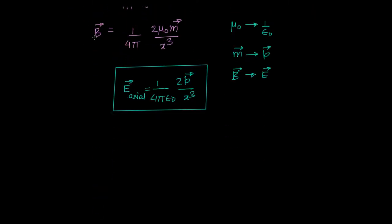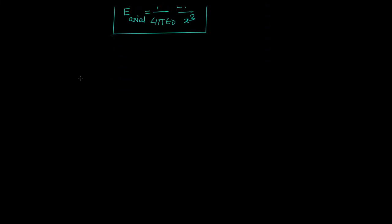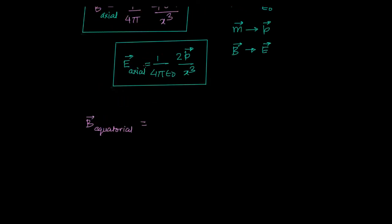If this is my B-axial, then what is my B-equatorial? By the same comparison with the electric case, my E-equatorial is first of all half of this in magnitude, so it becomes p upon 4 pi epsilon naught x cubed.